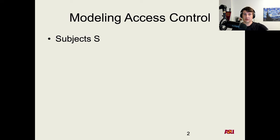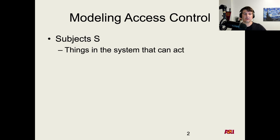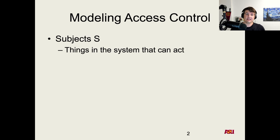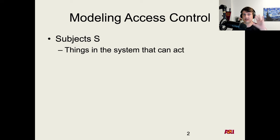When we think about access control, we have subjects. We'll use S to represent the set of subjects in the system. In access control terms, subjects are things in the system that can act. What a subject is depends on the specific system we're modeling. In the Unix access control model used in Linux and macOS, a process is something that can take actions — it can try to read or write to a file.